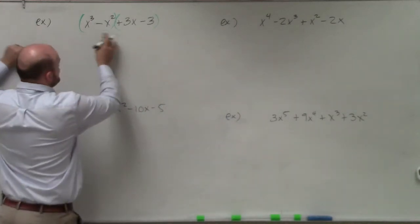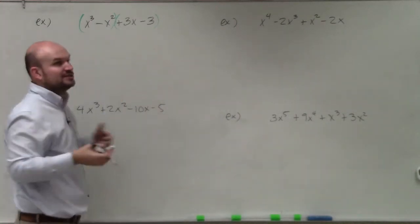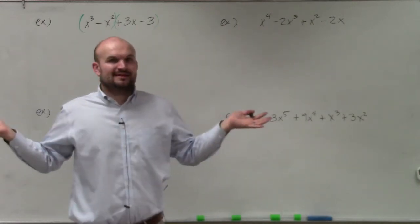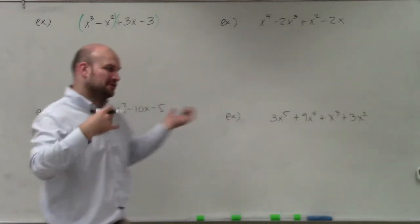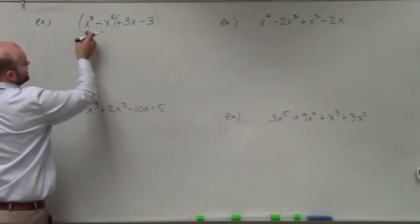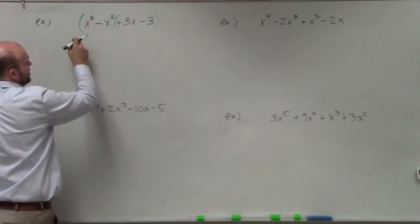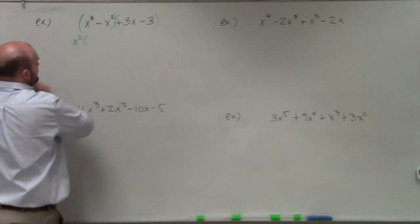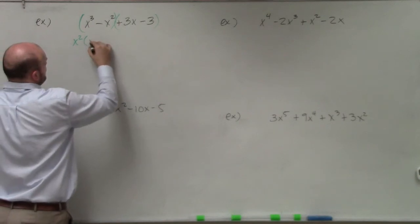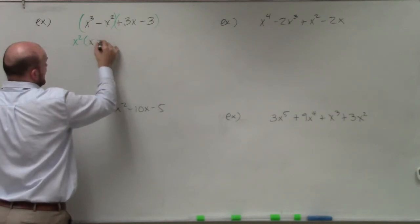So if you look at x³ minus—first of all, let's look at the GCF of all of them. Do they all share anything in common? No. So therefore I go into grouping. Here you can see that the first two terms share an x². So I factor out an x² and I'm left with x minus 1.